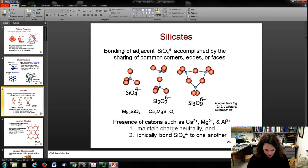Here are your silicates showing how they form bonds. The bonding of those adjacent tetrahedral structures is accomplished by sharing common corners, edges, or faces. You can see some of the structures right here. If you have cations like calcium, magnesium, and aluminum, it helps maintain charge neutrality and ionically bonds the silicates to one another, creating different minerals.